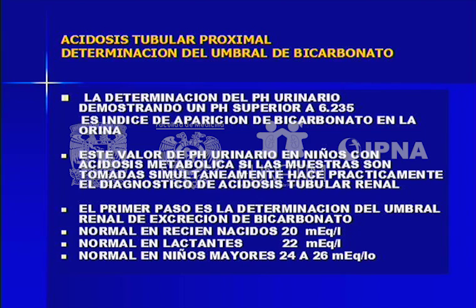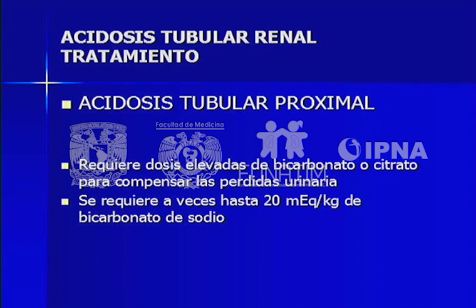Para confirmar el diagnóstico se hace la prueba para determinar el umbral de bicarbonato. Si el niño tiene acidosis metabólica y está perdiendo bicarbonato con cifras menores del umbral, el diagnóstico está hecho. La prueba es una infusión de bicarbonato tomando pH de orina reglados hasta que se encuentra bicarbonato en orina y se hace el estado de ácido-base en sangre. Esta acidosis se llama alcalirresistente porque se necesitan hasta 20 mEq/kg de bicarbonato para mantener un pH correcto.